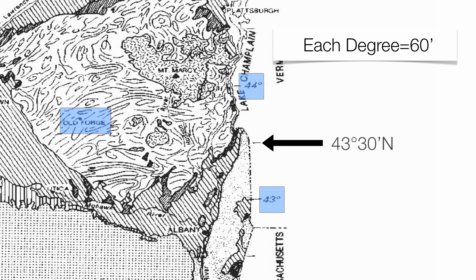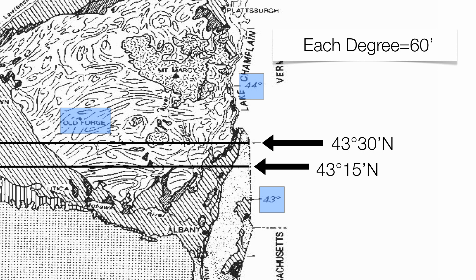To help us out, the map actually gives us a halfway marker — that's what we call the 30-minute marker, so that would be 43 degrees 30 minutes north. Because you increase your latitude from bottom of the map to top of the map, you're in the 43-degree range. Halfway between 43 degrees and 43 degrees 30 minutes, that's going to be my 15-minute marker, so that's 43 degrees 15 minutes north. Then halfway between 43 degrees 30 minutes and 44 degrees, that's going to be my 43 degrees 45 minutes north marker. And you can see that Old Forge is going to have a latitude of 43 degrees 45 minutes north.